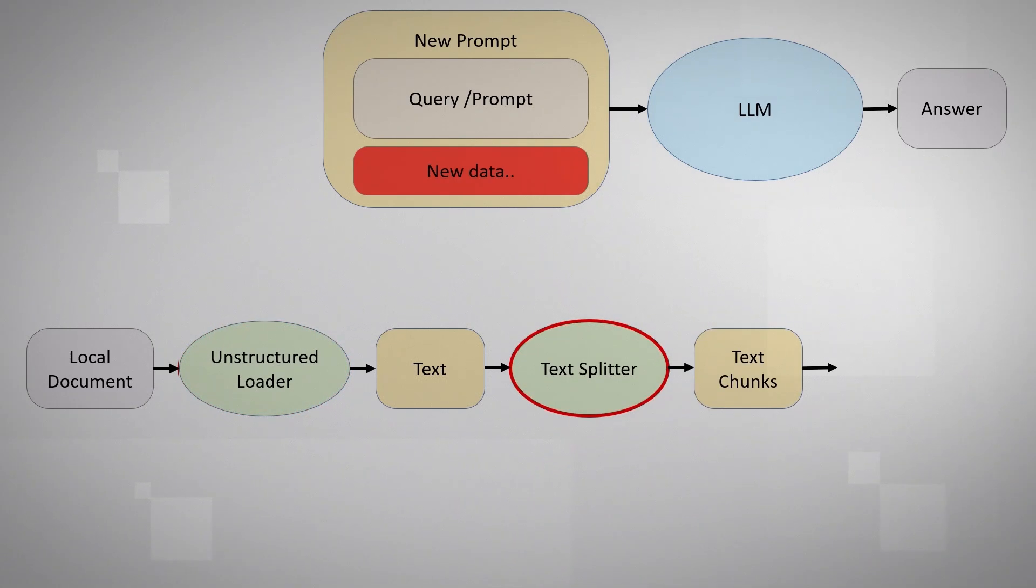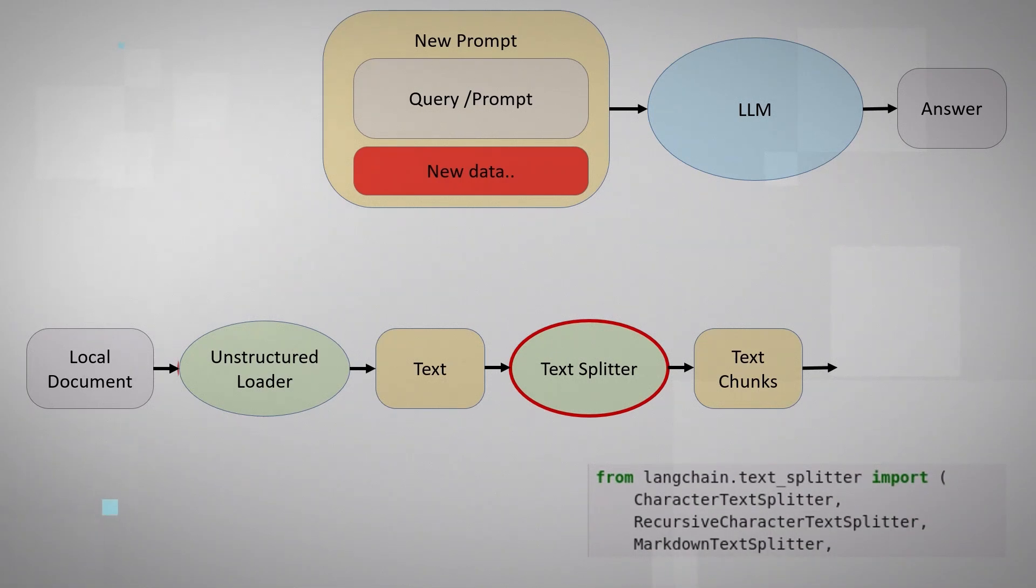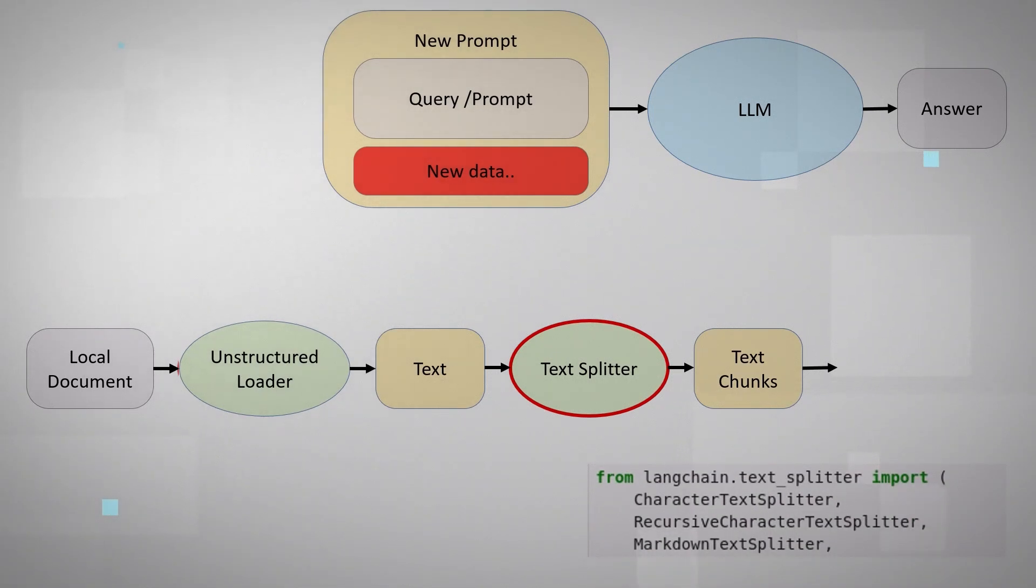Problem is that the text could be too large to fit into the prompt. It will contain too much information and of course a very long prompt will slow down the inference. So we can split the text into chunks. We are using Langchain simple text splitter for that.